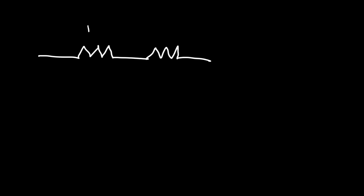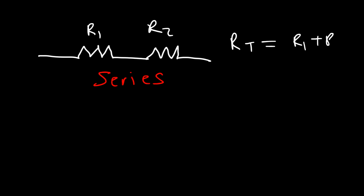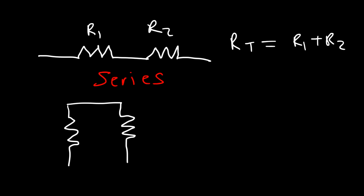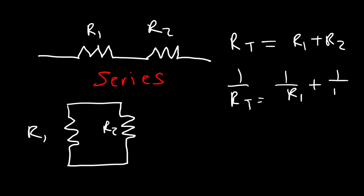Now let's talk about resistors. To connect two resistors in series, let's call them R1 and R2. The total resistance for two resistors in series is simply the sum: R1 plus R2. Now if you connect two resistors in parallel, the total resistance — or equivalent resistance — is given by: 1 over RT equals 1 over R1 plus 1 over R2.